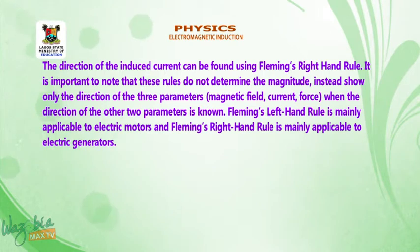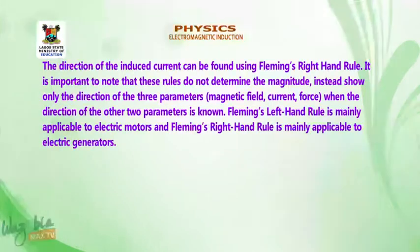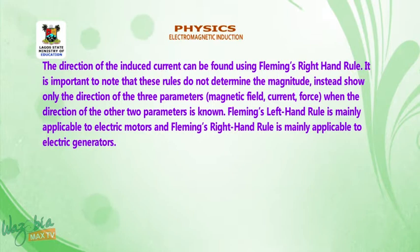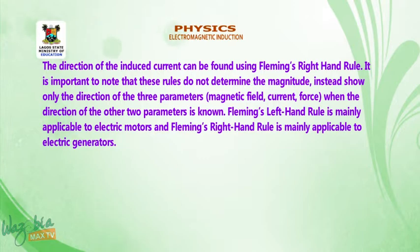It is important to note that these rules do not determine the magnitude. Instead, they show only the direction of three parameters: magnetic field, current, and force — when the direction of the other two parameters is known. Fleming's left hand rule is mainly applicable to electric motors, and Fleming's right hand rule is mainly applicable to electric generators.